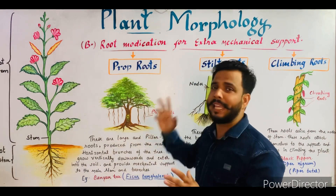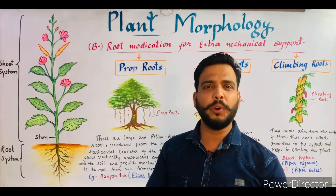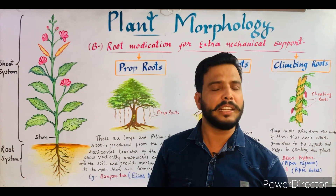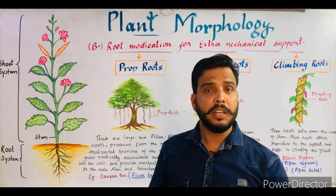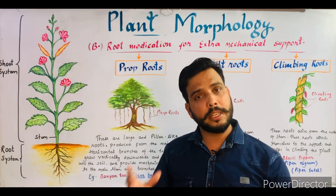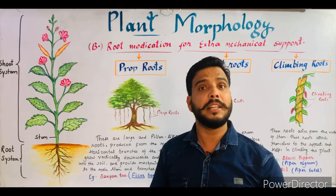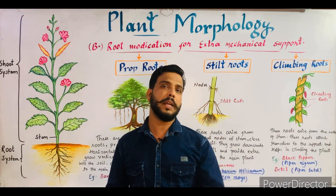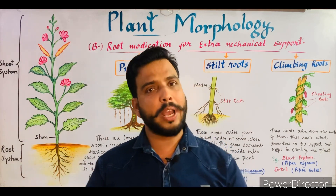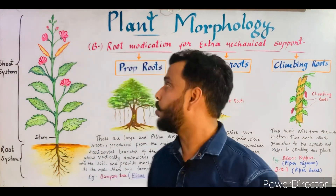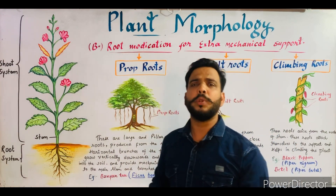In this lecture I will tell you about root modification for extra mechanical support. What is the meaning of extra mechanical support? Suppose a plant is growing in a normal way and it needs extra support — sometimes some special types of roots get modified to provide that extra support to the plant, and this is called root modification for extra mechanical support. I will tell you about three types of roots which help in providing this extra mechanical support.